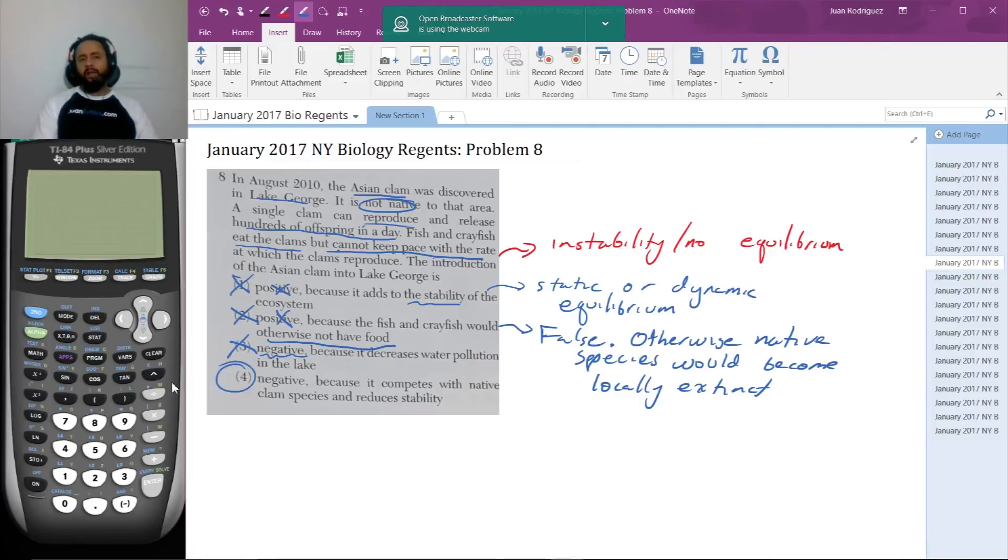So the only remaining answer is four. And let's see why that's the answer. Negative, again, it's negative. We agree that it's negative because it's causing instability in the system. It's killing off, it's out-competing the local life.